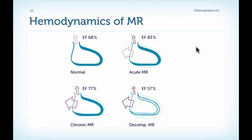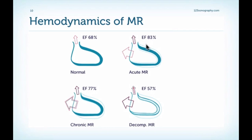If acute MR develops, we have flow back into the left atrium. Therefore, to sustain the normal outflow through the aorta, we have to compensate by increasing the ejection fraction. We cannot compensate in the early phases by increasing the volume because it's just too early. So we have hypercontractility and a more or less normal size of the left ventricle in the situation of acute MR.